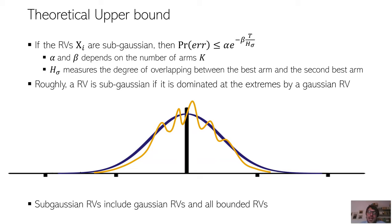So the first result is a theoretical upper bound. If the rewards are sub-Gaussian random variables, a distribution is sub-Gaussian if it is dominated at the extremes by a Gaussian distribution. So if the rewards are sub-Gaussian random variables, then the probability of misidentification exponentially decays with the budget T. Here alpha and beta depends on the number of arms, and SH measures the overlapping between the best and second best arms. So it is essentially an indicator of the problem hardness.